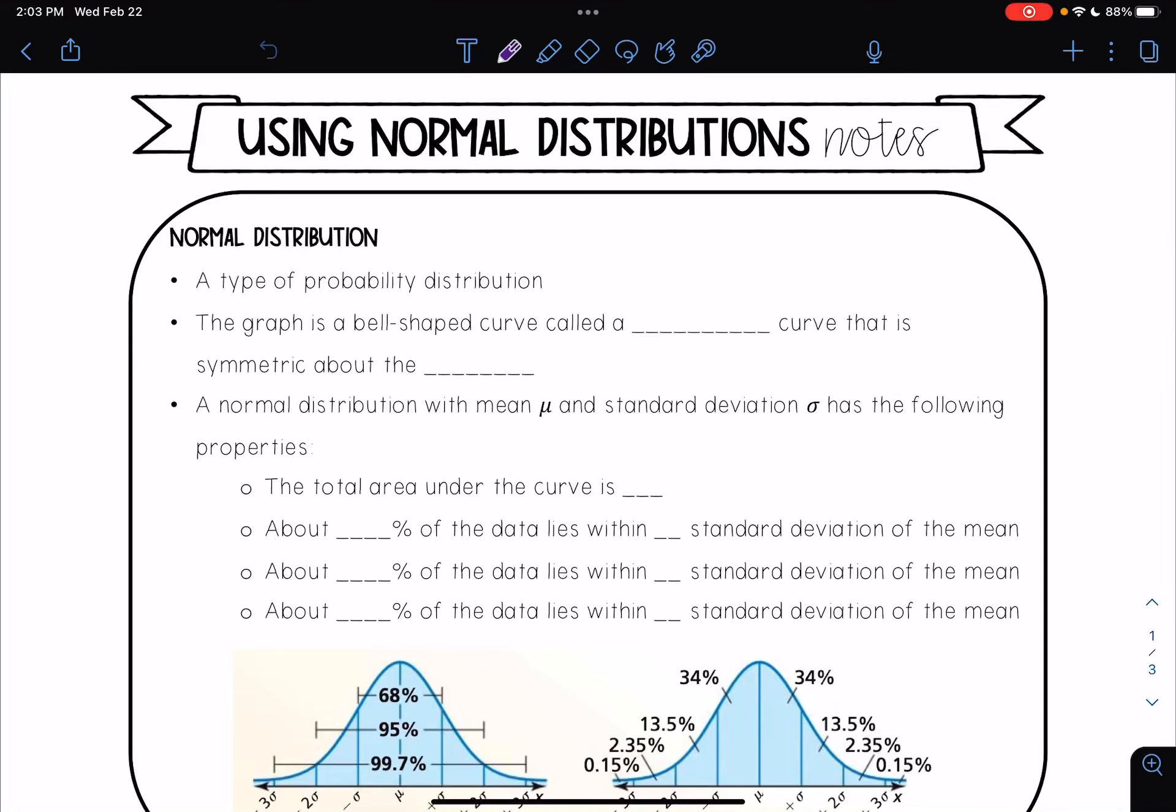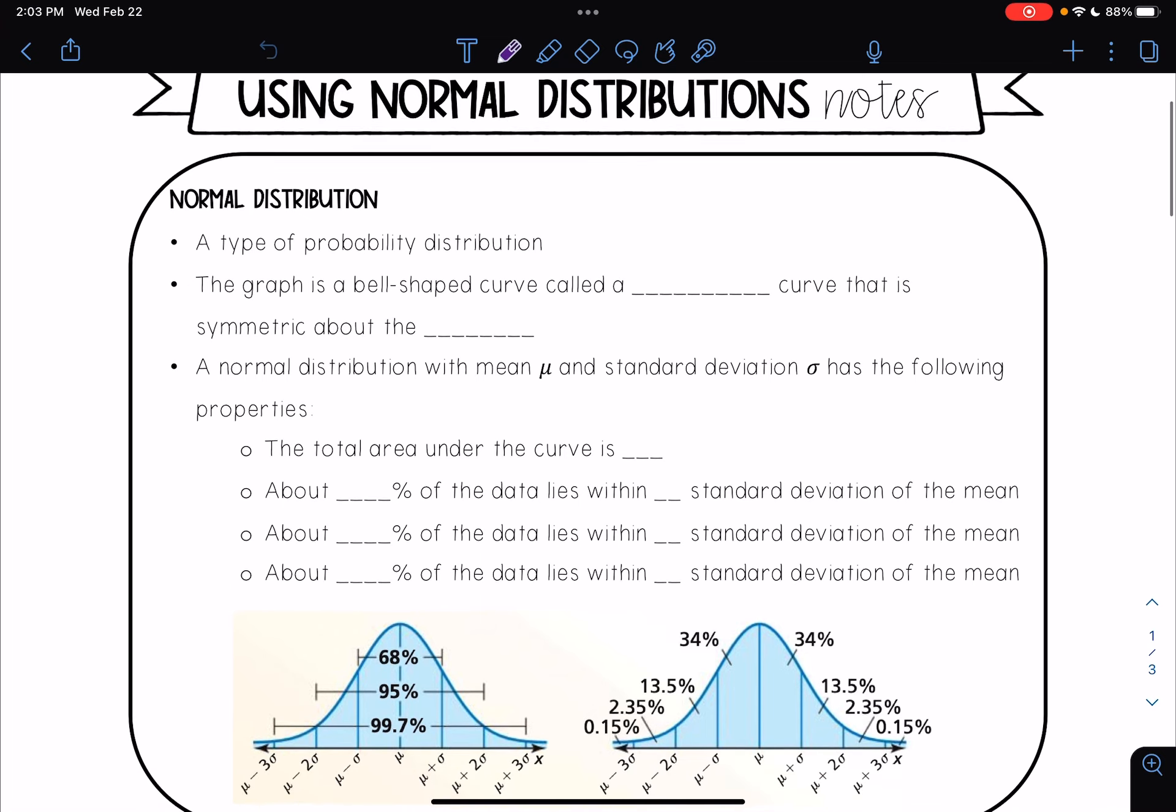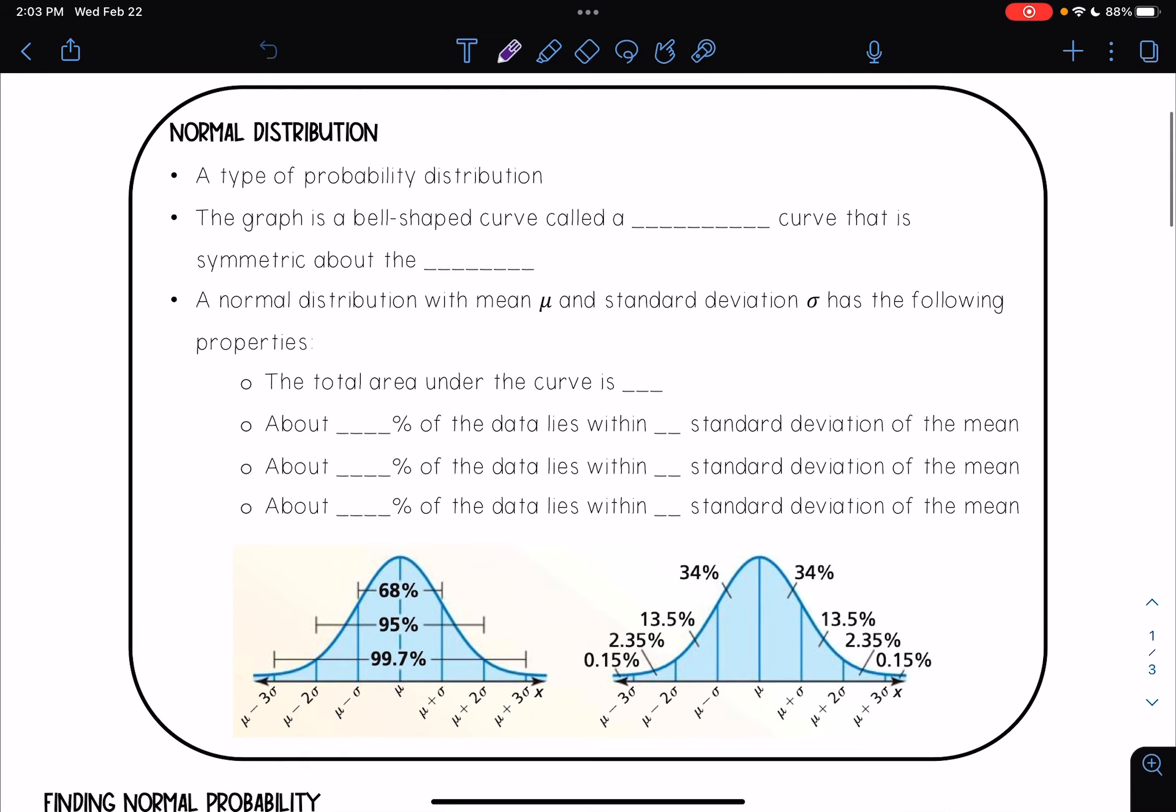Hello, everyone. In today's lesson, we're going to be talking about using normal distributions. So in the previous unit, we talked about probability distributions, and we looked at a certain type of probability distribution, which was the binomial one. Today, we're going to be talking about another type, which is normal distribution.